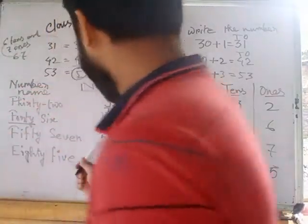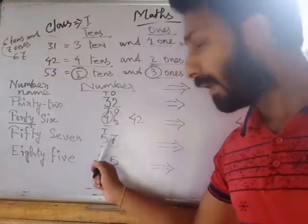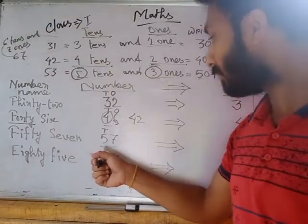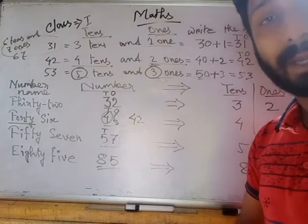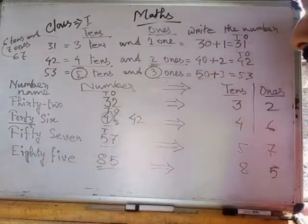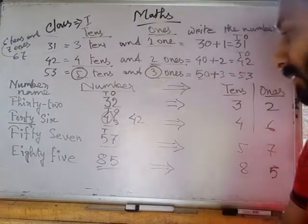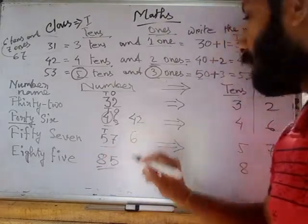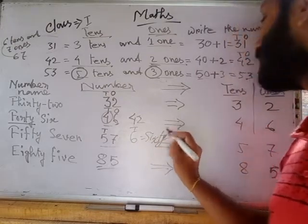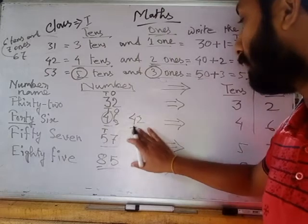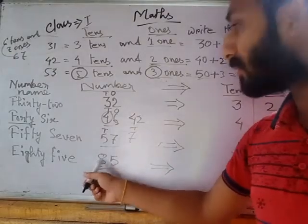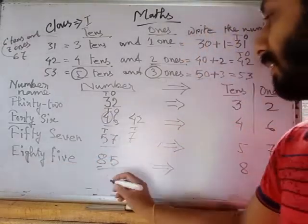If five is at the place of tens, that means it is 50. After 50 comes 51, 52, 53. You already know how to spell the ones: 1, 2, 3, 4, 5, 6, 7, 8, 9. After 50, you write 51, 52, 53, 56, and so on. If 6 is at the place of tens, that means it is 60, spelled S-I-X-T-Y. Then 61, 62, and so on. If 7 is at the place of tens, that means it is 70. If 8 is at the place of tens, that means it is 80.